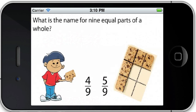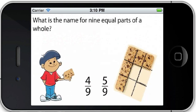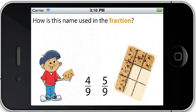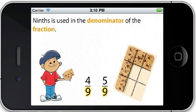What is the name for nine equal parts of a whole? The name for nine equal parts is ninths. How is this name used in the fraction? Ninths is used in the denominator of the fraction.